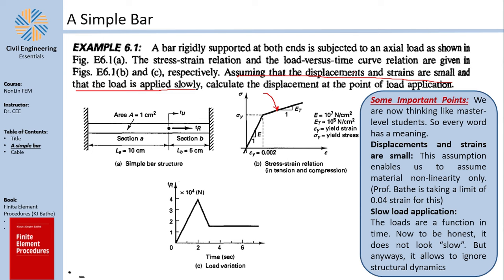The strains being small and displacements being small means that our nonlinearity is material nonlinearity only. Professor Bathe takes a limit of 0.04 strain (4%) for this, which seems reasonable. We adopt his limit: small strains, small displacements, and only material nonlinearity — we are not going to assume geometric nonlinearity.